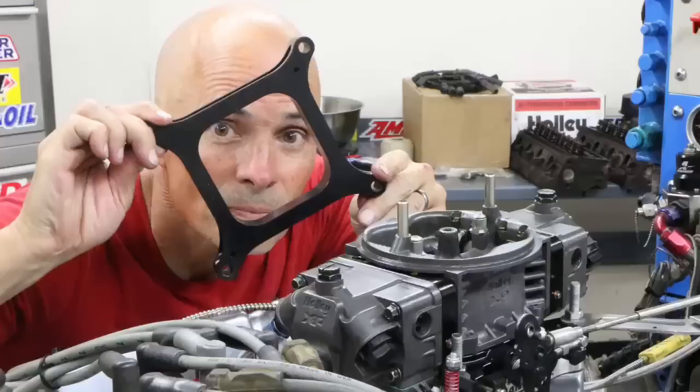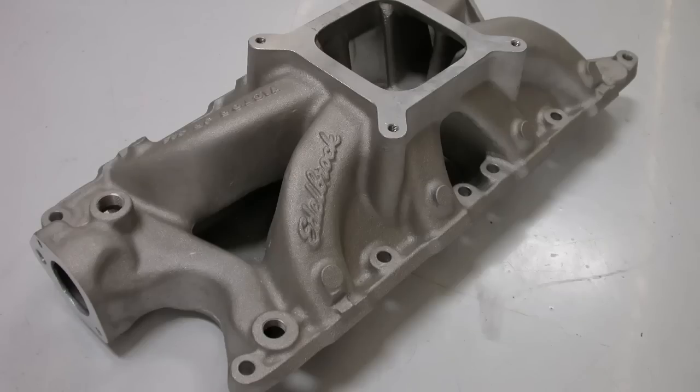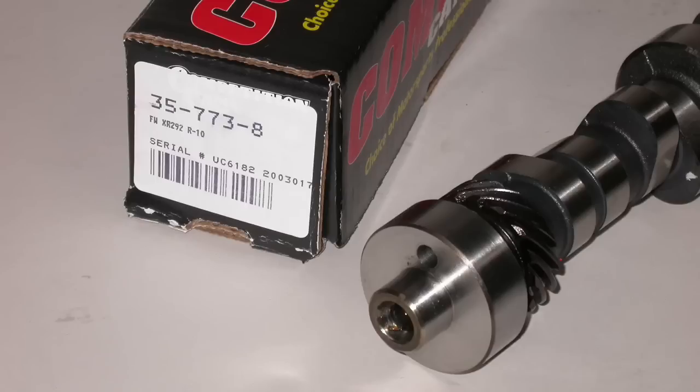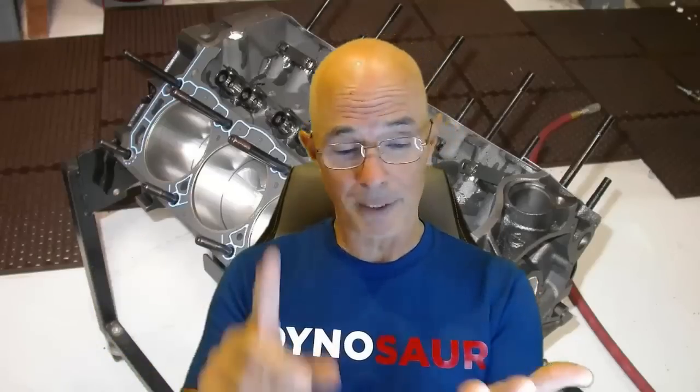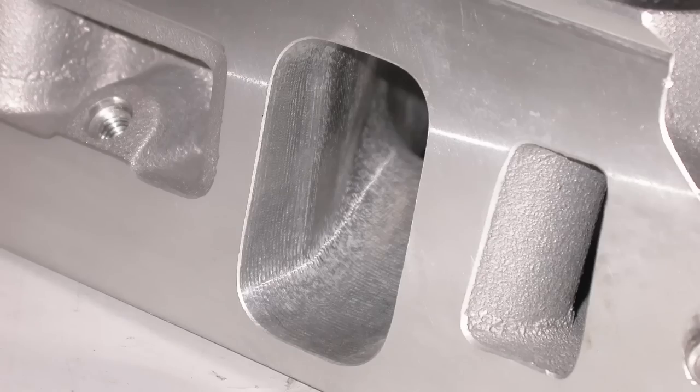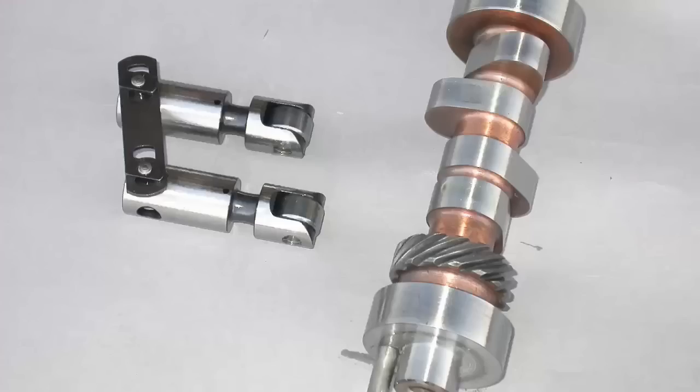Specifically 347 small block Ford power, and a pretty good one to begin with. What happens when you run a carb spacer on a single plane intake manifold? What happens when you step up from a pretty aggressive hydraulic roller cam to a very aggressive solid roller cam? I don't know. Let's check it out.